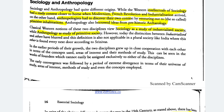In anthropology, the societies are old — they already existed — so anthropologists use archaeology methods: artifacts, landscape, etc., to study them and determine what type of society it was. Western intellectuals of sociology had context closer to home when modernity, the French Revolution, and industrialization arrived, giving them a ready-made context to study society — and from this emerged sociology.